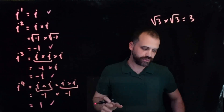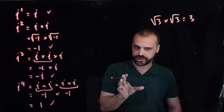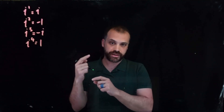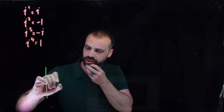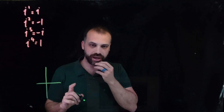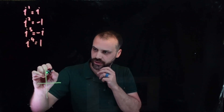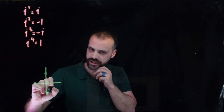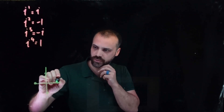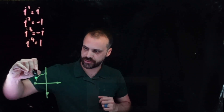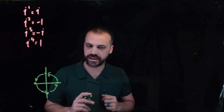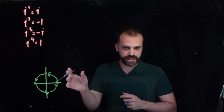I'm just going to get rid of all this and summarize. So that's: i, negative 1, negative i, and 1. And on our Argand diagram, we're looking at i, we're looking at negative 1, we're looking at negative i, and we're looking at 1. We get this rotation from here to here, from here to here, from here to here, and from here to here.